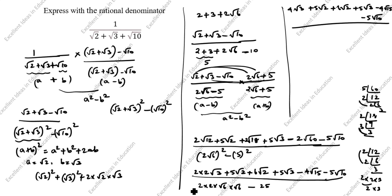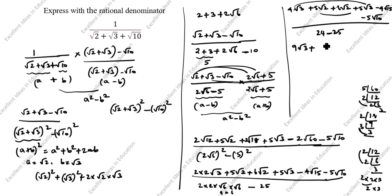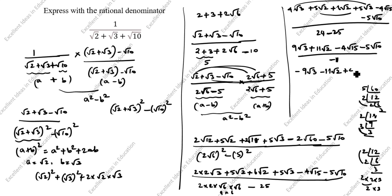Dividing by minus 1 and combining like terms: 4 root 3 plus 5 root 3 gives 9 root 3, and 5 root 2 plus 6 root 2 gives 11 root 2. So the numerator is 9 root 3 plus 11 root 2 minus 4 root 15 minus 5 root 10, all divided by minus 1. Changing all signs gives the final answer: minus 9 root 3 minus 11 root 2 plus 4 root 15 plus 5 root 10.